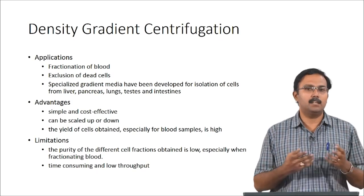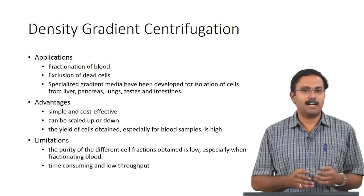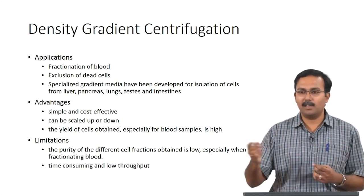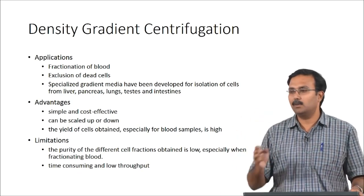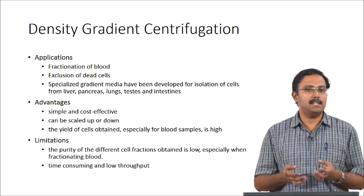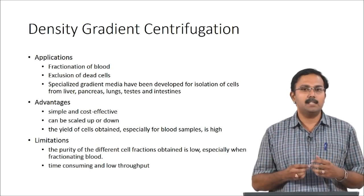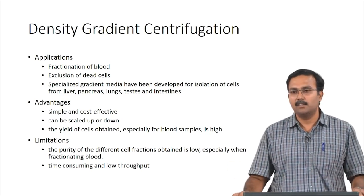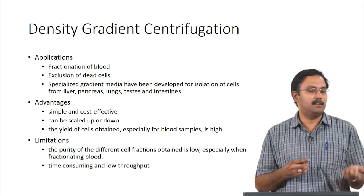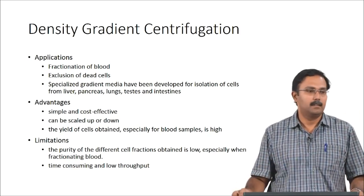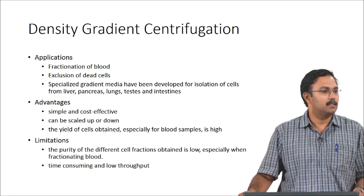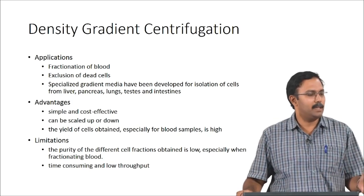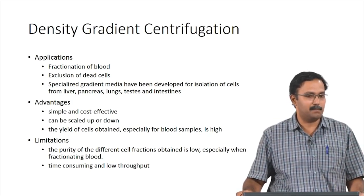The most common applications for density gradient centrifugation are fractionation of blood and exclusion of dead cells — you can simply remove dead cells floating on top to retain only live cells. Specialized gradient media can also be prepared for isolation of cells from liver, pancreas, lungs, testes, and intestines. Gradient medium can be used for blood as well, but without gradient medium you can also achieve density-based separation simply by spinning blood to get different layers.